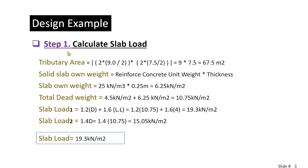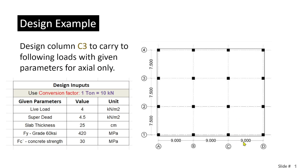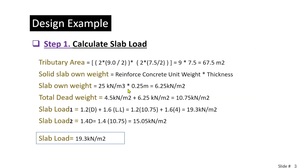Step 1 is to compute the slab load. According to our plan, the tributary area is determined as follows: 9 meters in the x-axis and 7.5 meters in the y-axis, giving a tributary area of 9 by 7.5 meters, which evaluates to 67.5 meters squared.